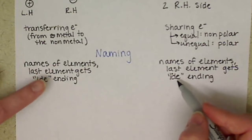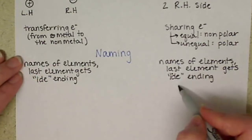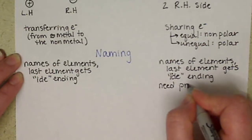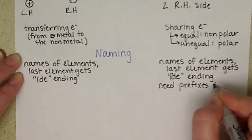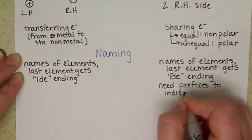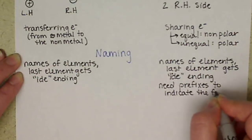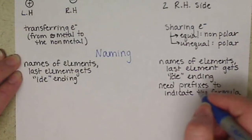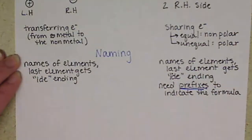The main distinction is covalent also has an additional rule: you need the prefixes to indicate the formula, basically how many of each element are in there. So if you have prefixes in a name, that means you are looking at something covalent. If you don't have any prefixes, then you're looking at something ionic.